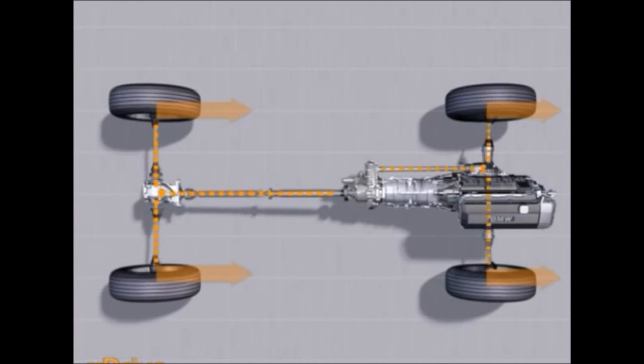The clutch distributes driving force between the front and rear axles, variably, infinitely, according to the driving situation and within a fraction of a second. In extreme cases, the entire driving force can be diverted onto the front or rear axle.